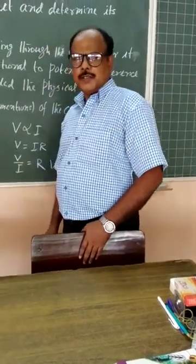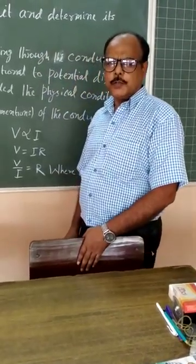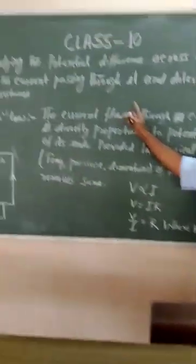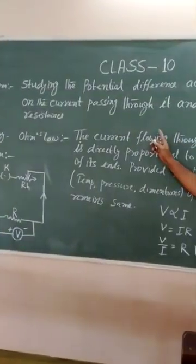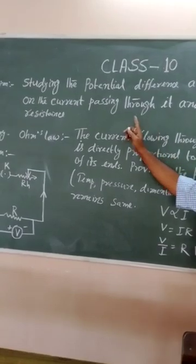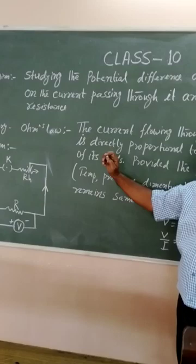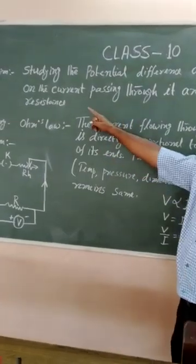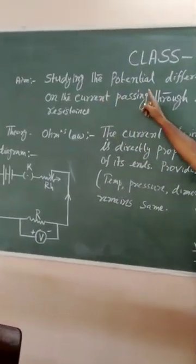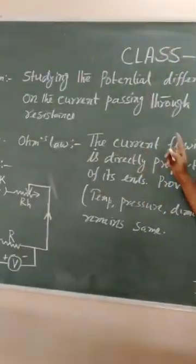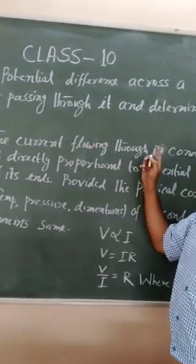Friends, I am Jason Perzhaak, physics lab instructor. This practical class 10 is for class 10, the first experiment. This experiment is to study the potential difference across a resistor and the current passing through it and determine its resistance.